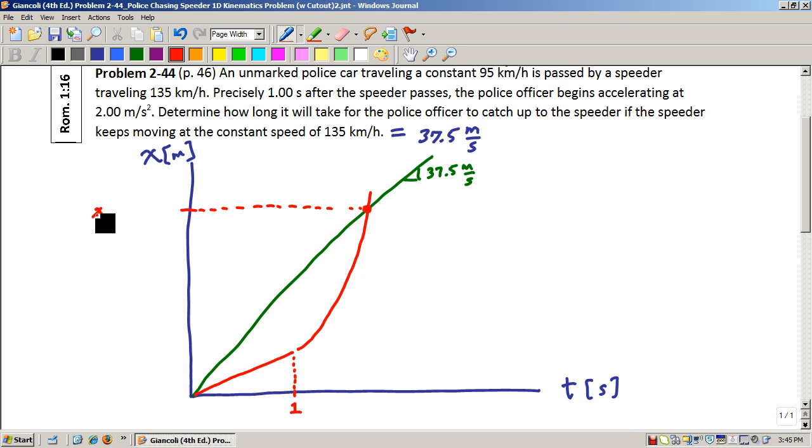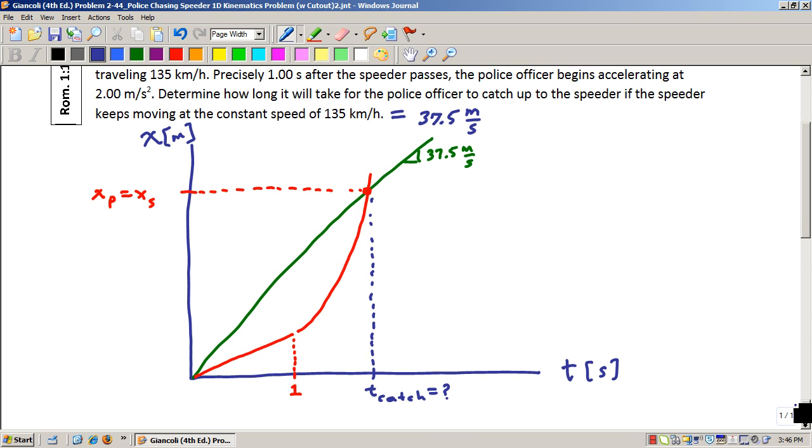So, this is where the position of the police officer equals the position of the speeder. The question then is, how long did it take for that to happen, for the police officer to catch up to the speeder? So, I'll call that T-catch.